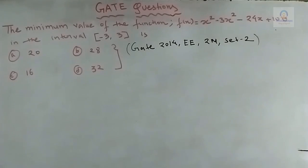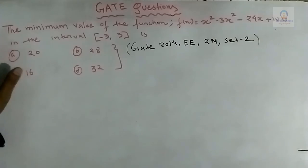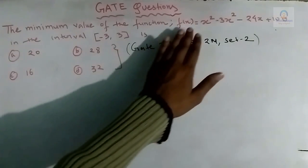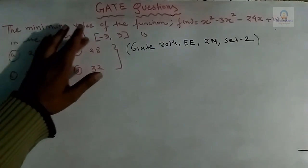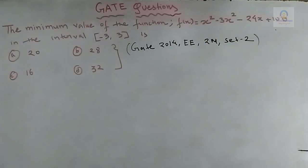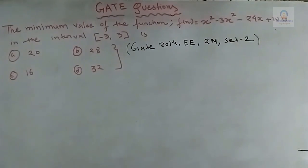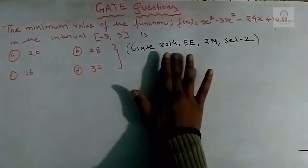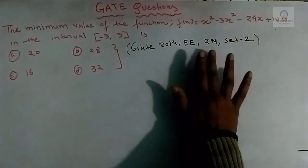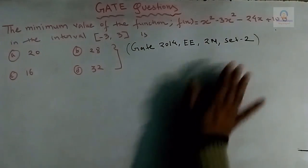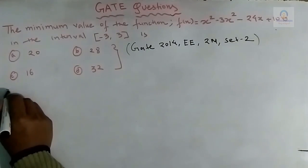Hello everyone, welcome to Technical Campus. Let us solve some questions from GATE on the topic of maxima and minima of a function. In this question, we have to calculate the minimum value of the function f(x) in the interval minus 3 to 3. This question came in GATE 2014, Electrical Engineering, Set 2, for two marks.